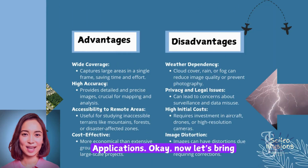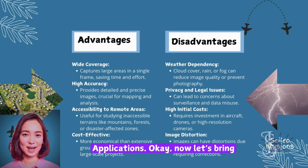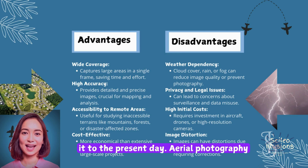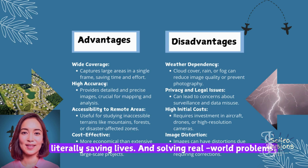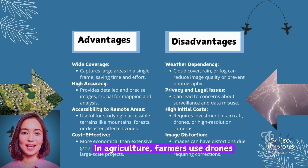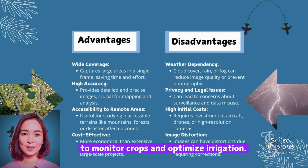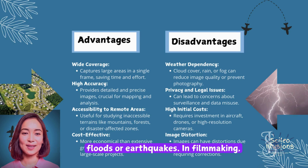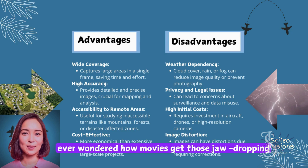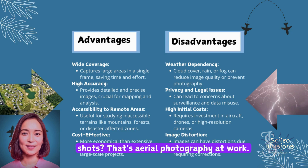Now let's bring it to the present day. Aerial photography isn't just about pretty pictures — it's literally saving lives and solving real-world problems. In agriculture, farmers use drones to monitor crops and optimize irrigation. In disaster management, aerial photos help assess damage and guide rescue operations during floods or earthquakes. In filmmaking, ever wondered how movies get those jaw-dropping shots? That's aerial photography at work.